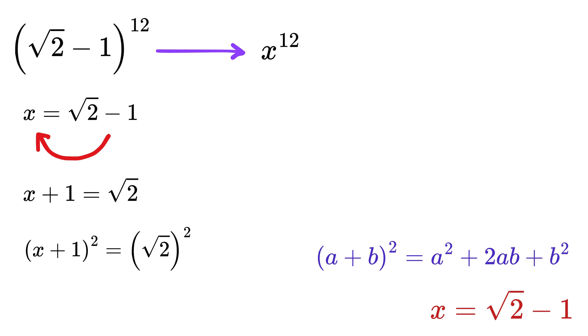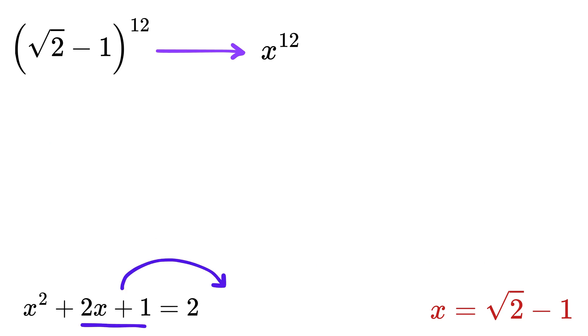We can now use the (a+b)^2 formula, so we get x^2 + 2x + 1 = 2. Now take 1 and 2x on the right-hand side to get x^2 = 1 - 2x.